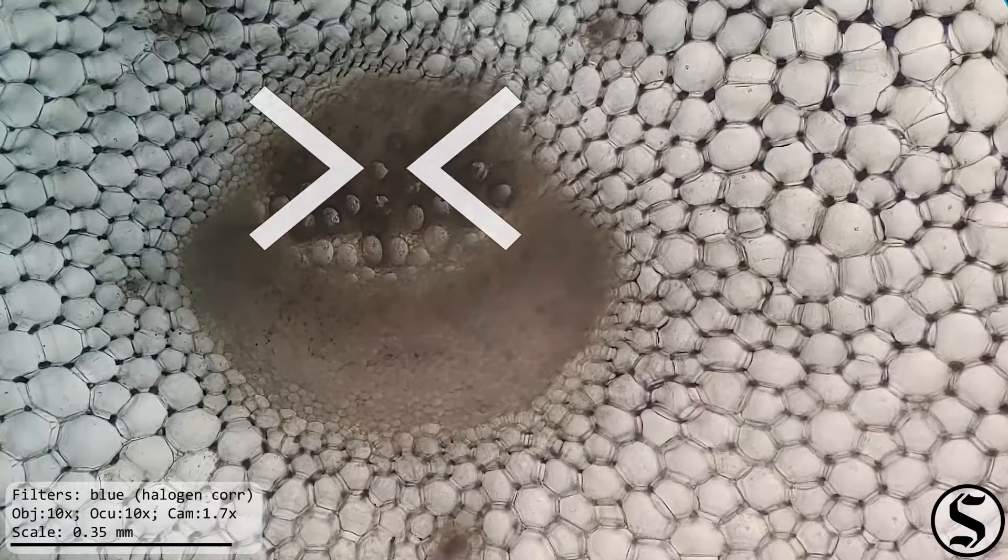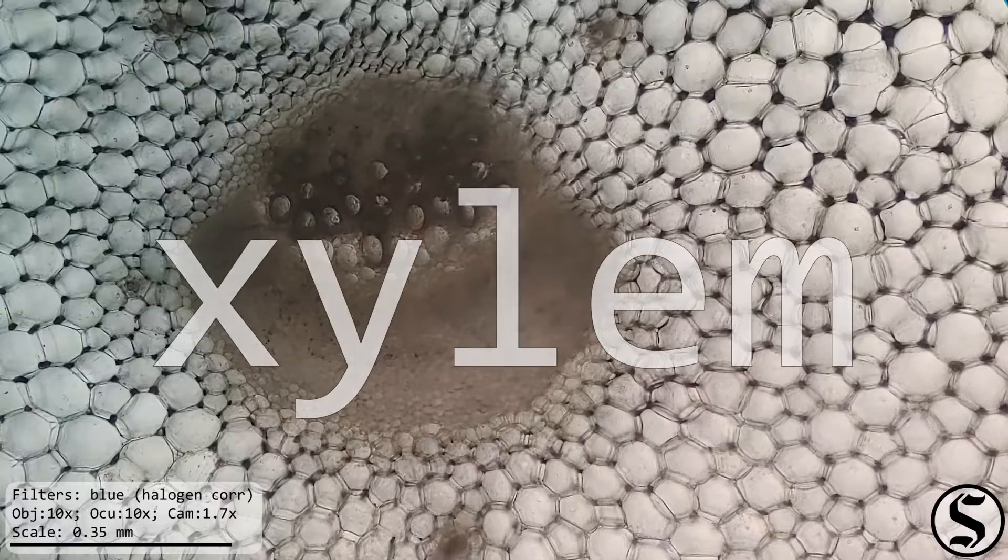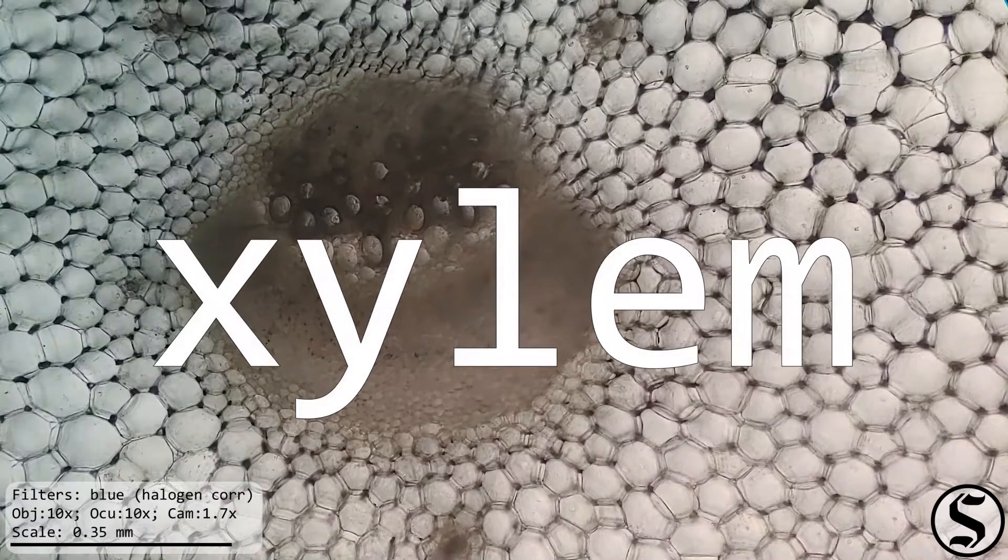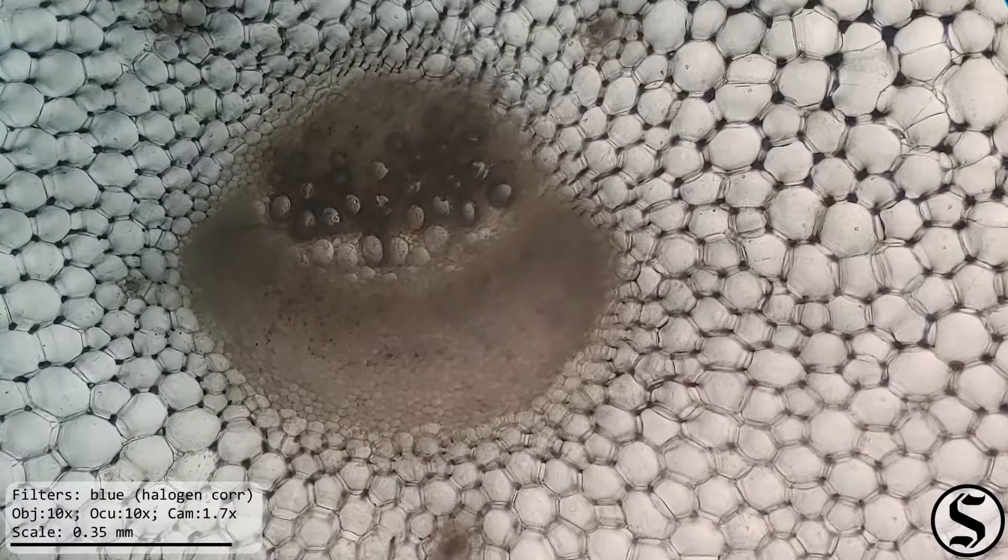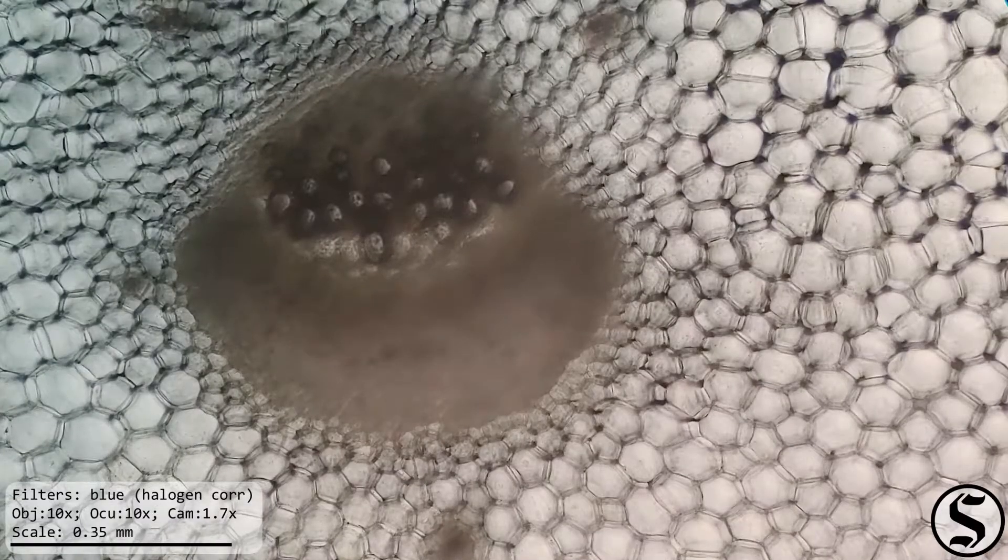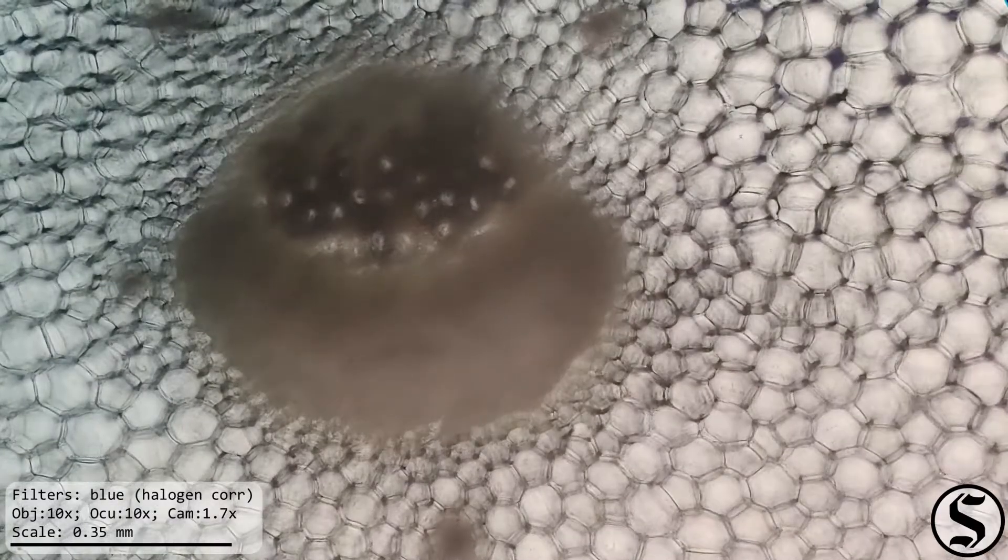And then that inner portion there is the xylem that's from the Greek word for wood and that carries water and other nutrients from the root up to the plant and that's why it's got all those tracheid tubes in there.